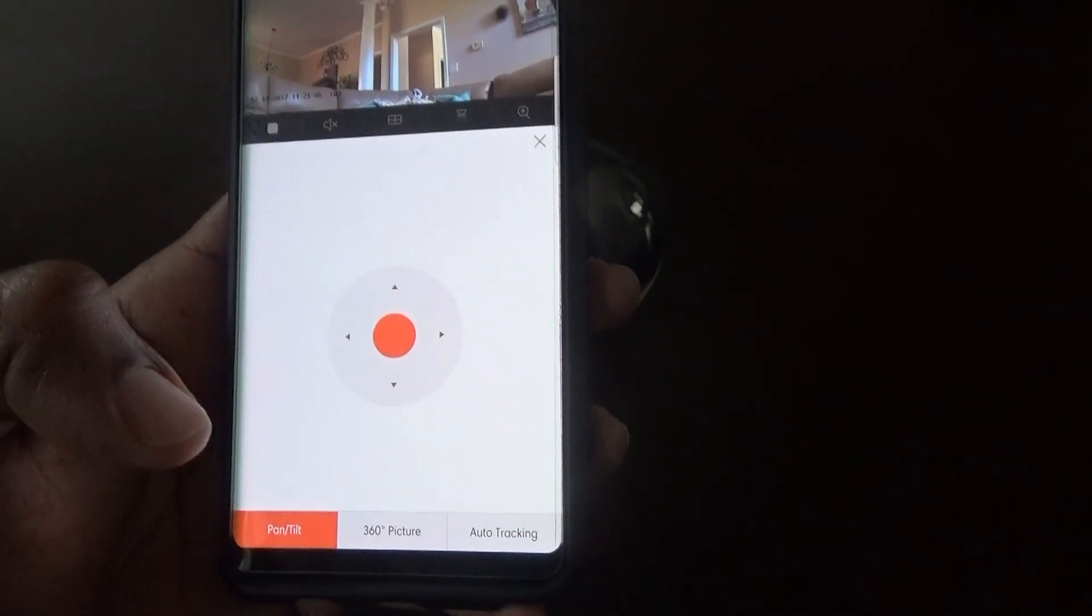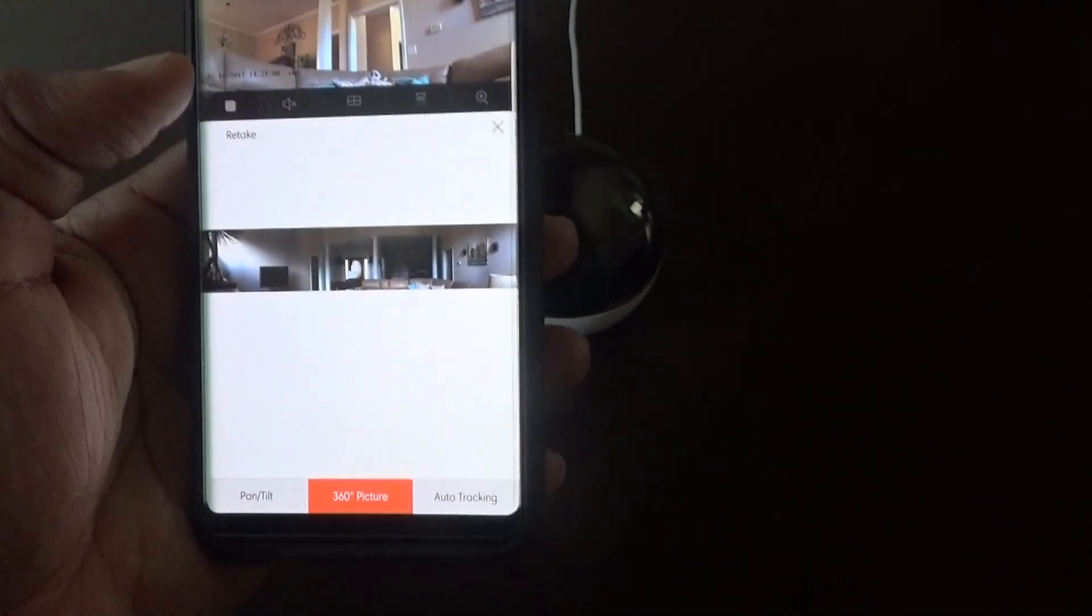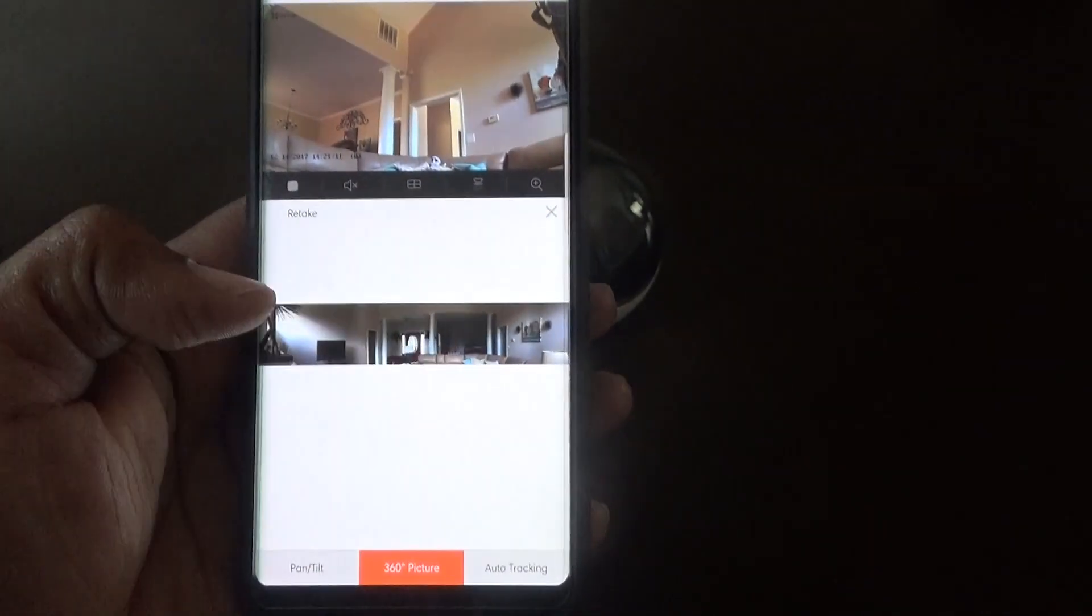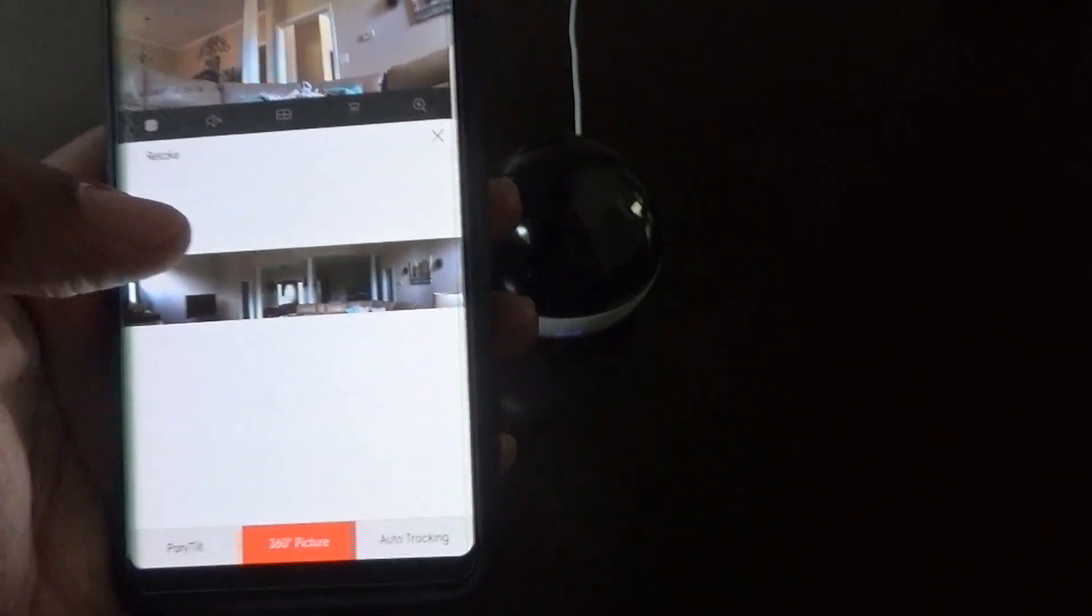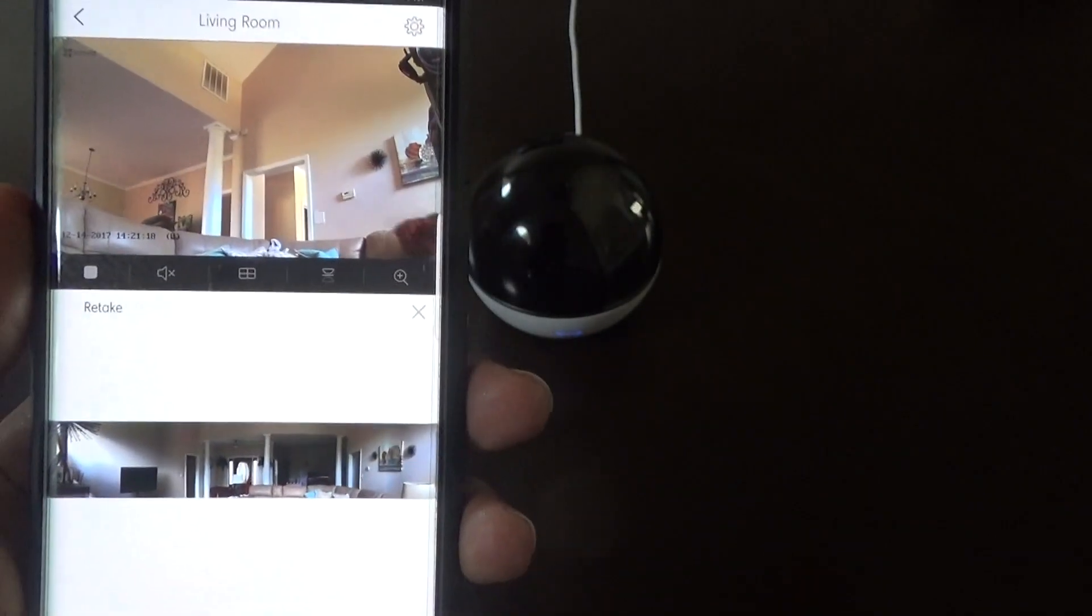Another cool thing is you can take a full panoramic image of the room just by hitting that button. Hit take, it'll take that picture, and you'll get a sense of what's actually going on in that room at the time.